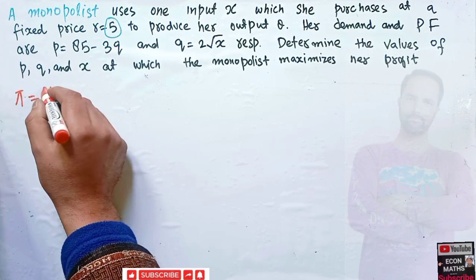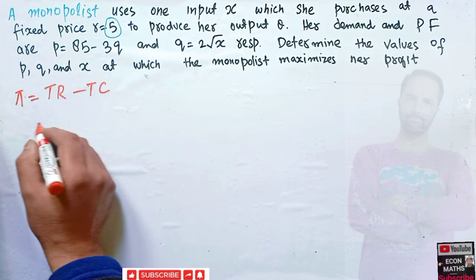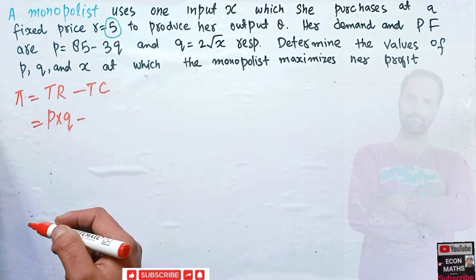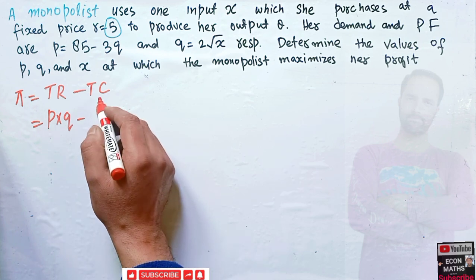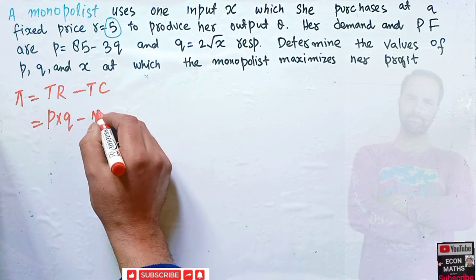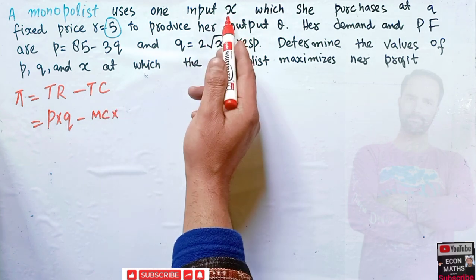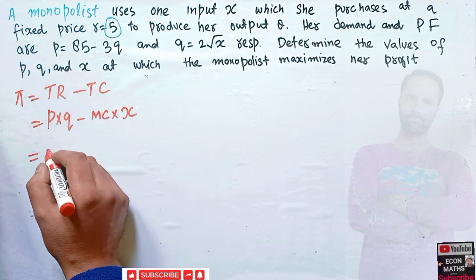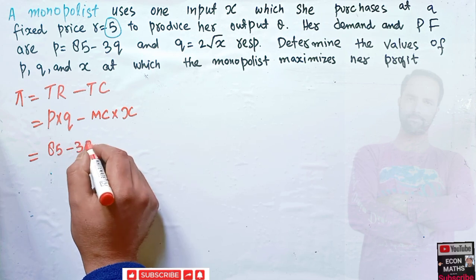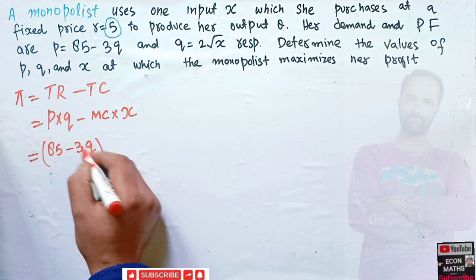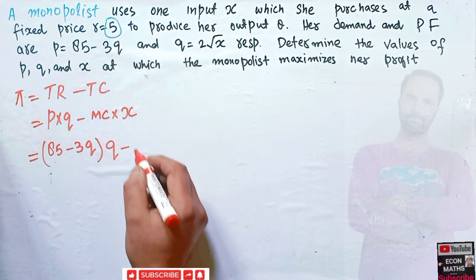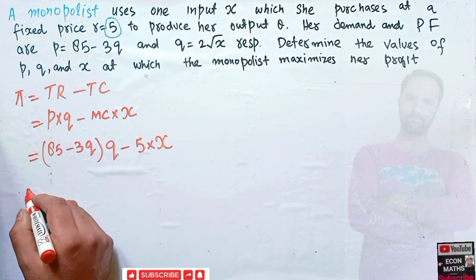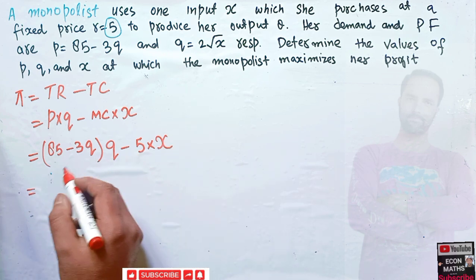The profit function is simply given by total revenue minus total cost. Total revenue is price into quantity. Total cost for this monopolist is the input price times the units of input she is purchasing. So P is 85 minus 3Q, multiplied by Q, minus the input cost R equal to 5 times X.